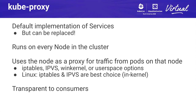Kube Proxy is the default implementation of services, but like most things in Kubernetes, it can be replaced. It's part of the main repository and basically allows every pod and every node on the cluster to access the service virtual IPs and the pods behind the service. Kube Proxy uses the node as a proxy for traffic from pods on that node to the backends of the service. There are many different ways to do this: IP tables, IPVS, on Windows you can use the Windows kernel, or there's even a user space option — that was the original implementation. On Linux, IP tables and IPVS are the best choice: they're in-kernel and very high performance.